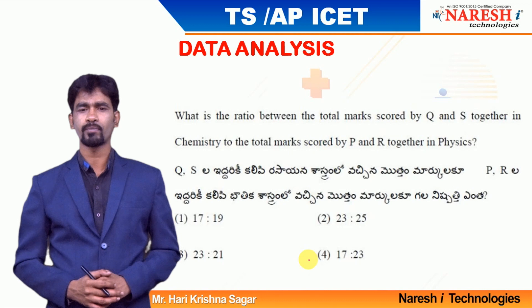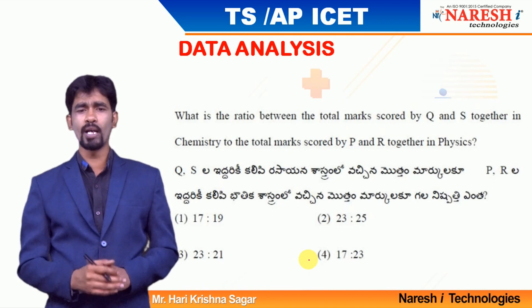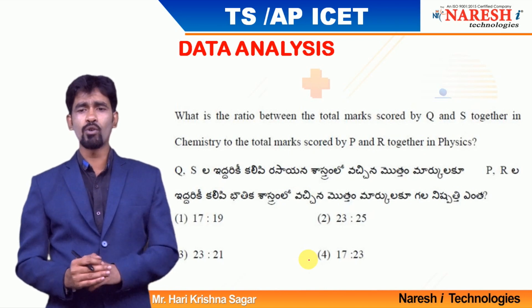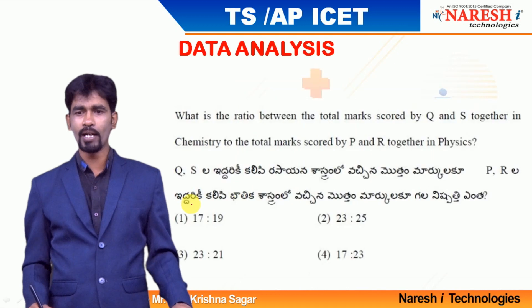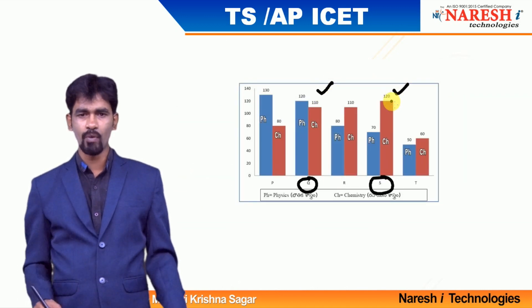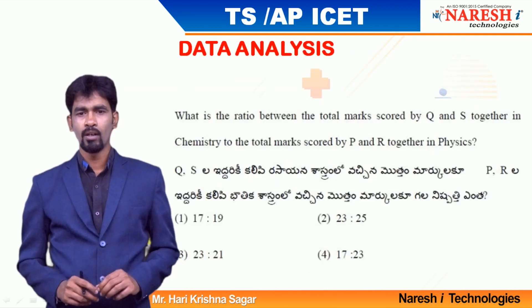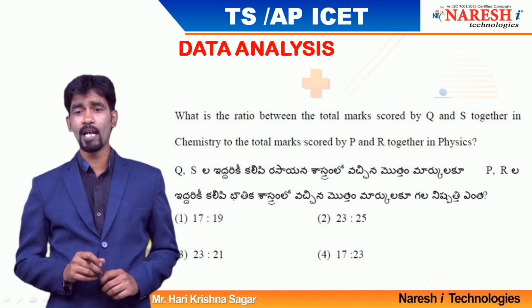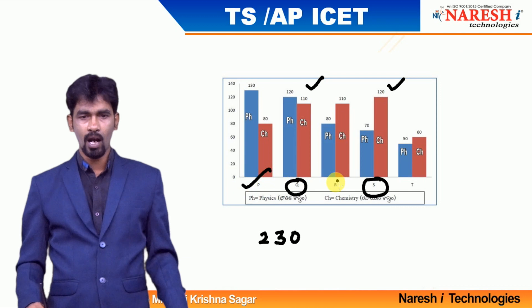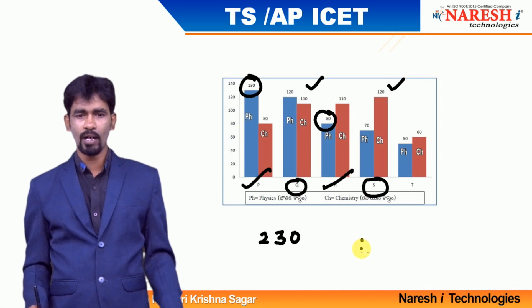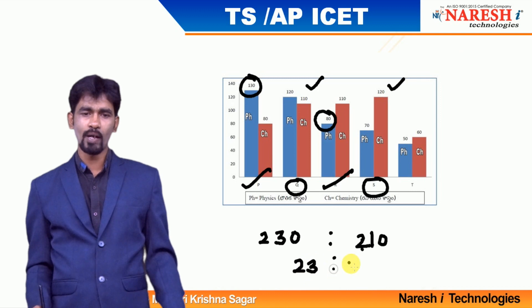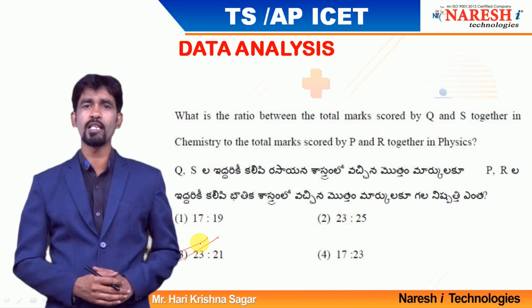Question 3: What is the ratio of marks obtained by Q and S together in chemistry to total marks obtained by P and R together in physics? Q's chemistry is 110, S's chemistry is 120 — total 230. P's physics is 130, R's physics is 80 — total 210. Ratio = 230:210 = 23:21. Mark Option 3 as the answer.